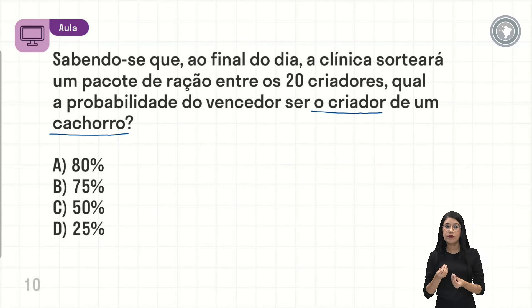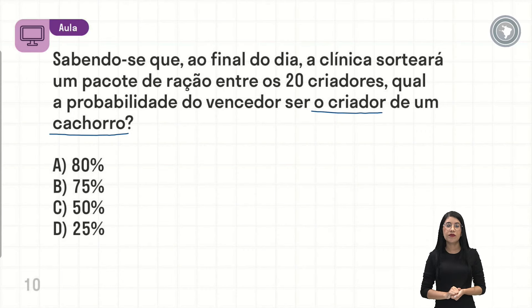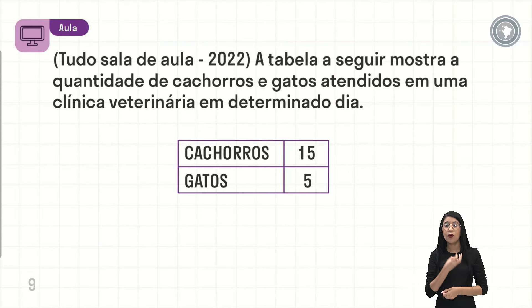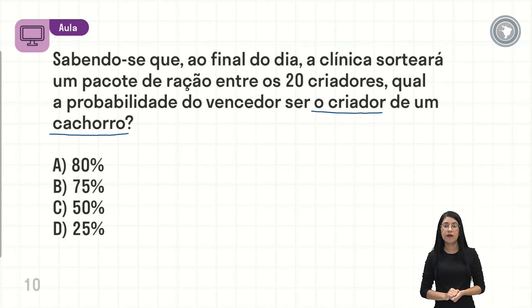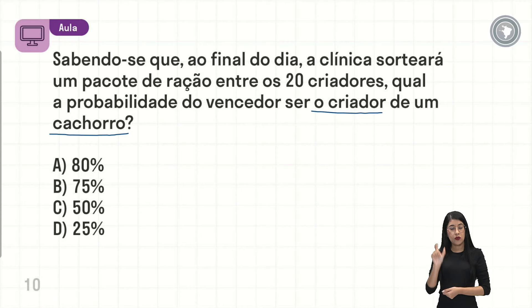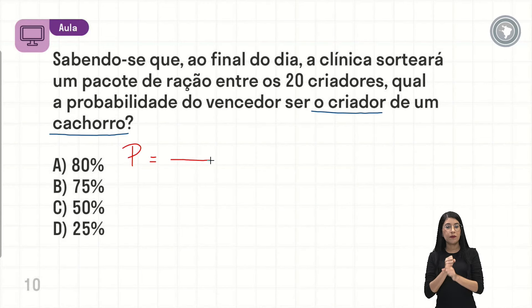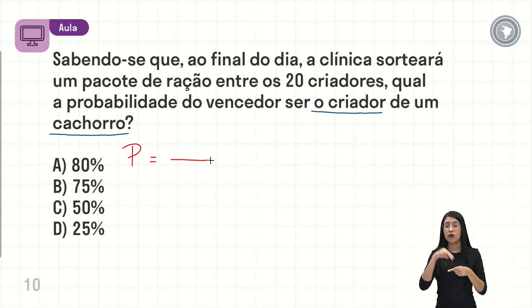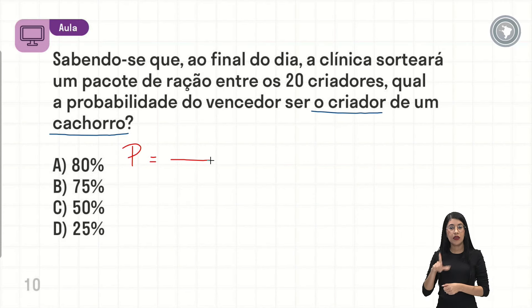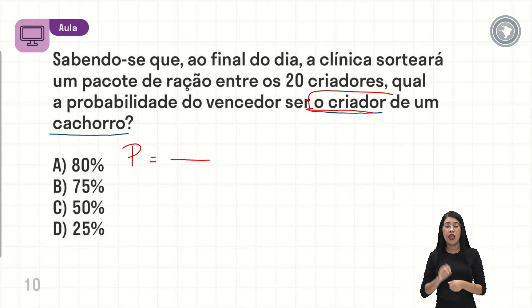Então a pergunta é: o vencedor ser criador de um cachorro. Olhando na tabela, quantos são criadores de cachorros? São 15. Ele quer que saia pelo menos um que seja criador de cachorro. A probabilidade de algum evento a gente coloca em fração: em cima fica o numerador, embaixo o denominador. No numerador a gente vai colocar exatamente o que a gente quer. O que a gente quer? Que a pessoa contemplada com o pacote de ração seja criador de cachorro. São 15 possibilidades, porque eu tenho 15 criadores de cachorro.